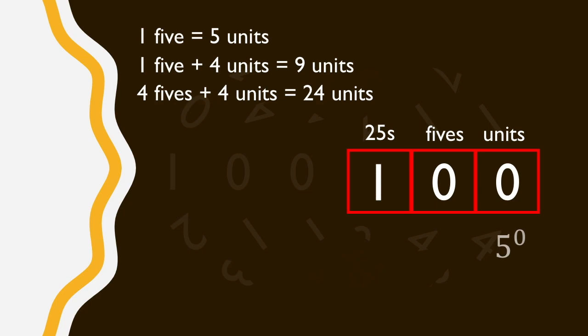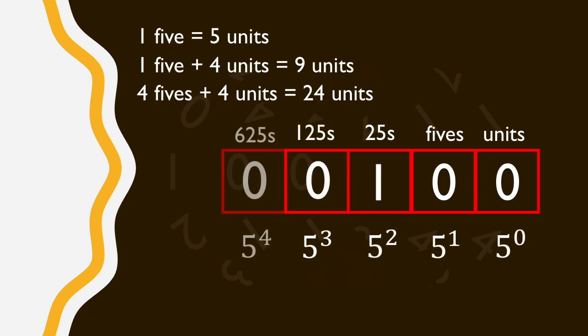And so now when we go to 1, 0, 0, the 1 represents 25 units, 5 lots of those 5s, and the pattern repeats the same for each column.